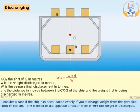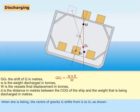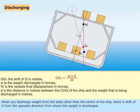Consider a case where the ship has been loaded evenly. If you discharge weight from the port side deck of the ship, she is listed to the opposite direction from where the weight is discharged. When she is listing, the center of gravity G shifts from G to G1 as shown. When you discharge weight from the sides other than the center of the ship, there is a shift of G from the opposite direction from where the weight is discharged.